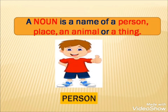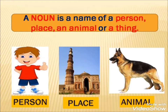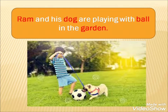So, is it clear to you students? Again I repeat: a Noun is a name of a person, place, animal or a thing. Okay children? I repeat — a Noun is a name of a person, place, animal or a thing.